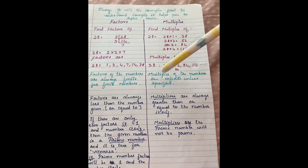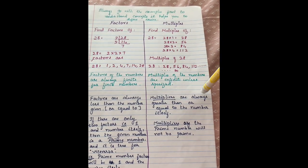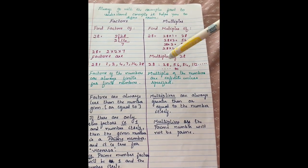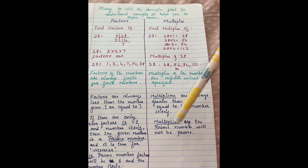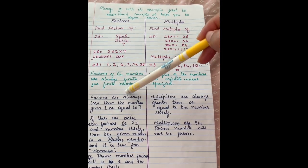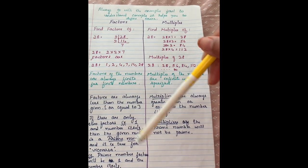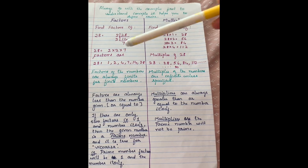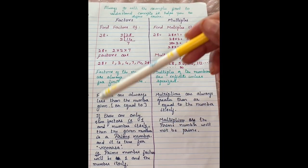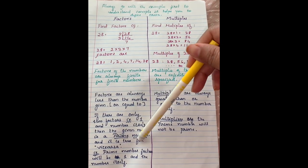Multiples of the numbers are infinite unless specified. Multipliers are always greater than or equal to the number itself. Multipliers of a prime number will not be prime. Factors are always less than or equal to the given number. If there are only two factors, that is one and the number itself, then the number is prime, and vice versa.